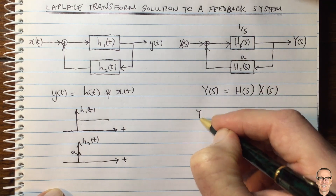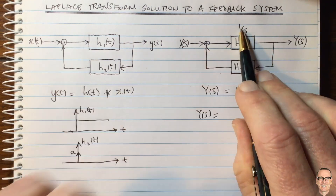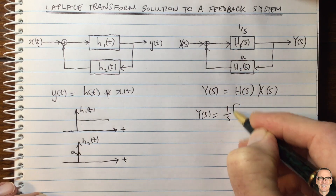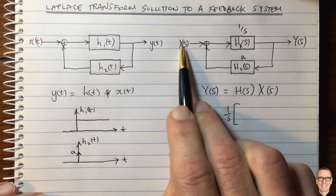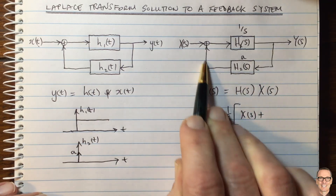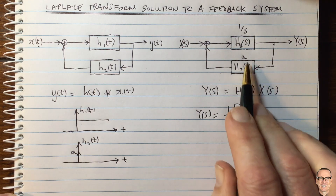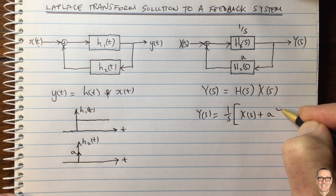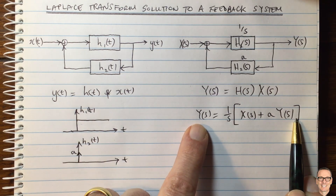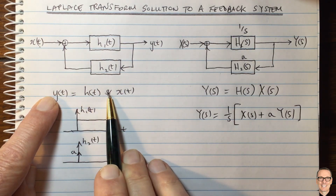Y(S) equals 1/S times the input to that filter. The input to the filter is X(S) plus the fed-back component, and because in the Laplace domain it's a multiplication, the fed-back component is simply A times Y(S). So we've got an equation we can write down here, which is much simpler than if we'd had to work in the time domain with all of the convolutions.